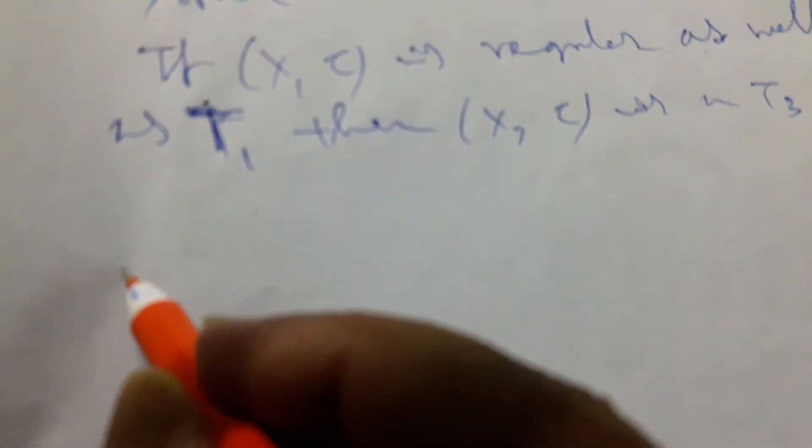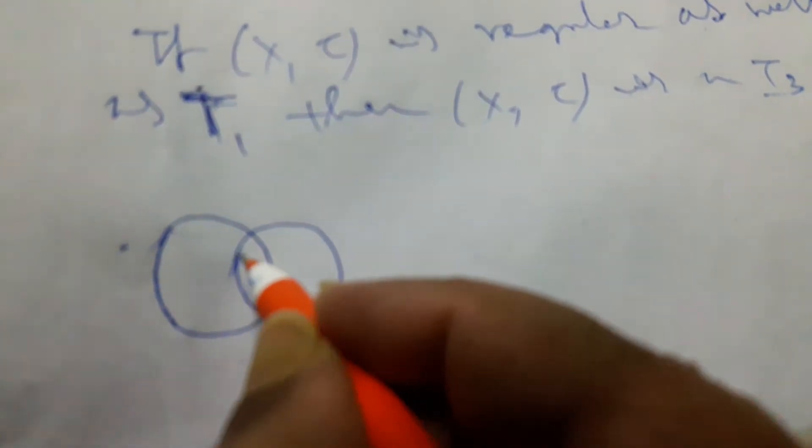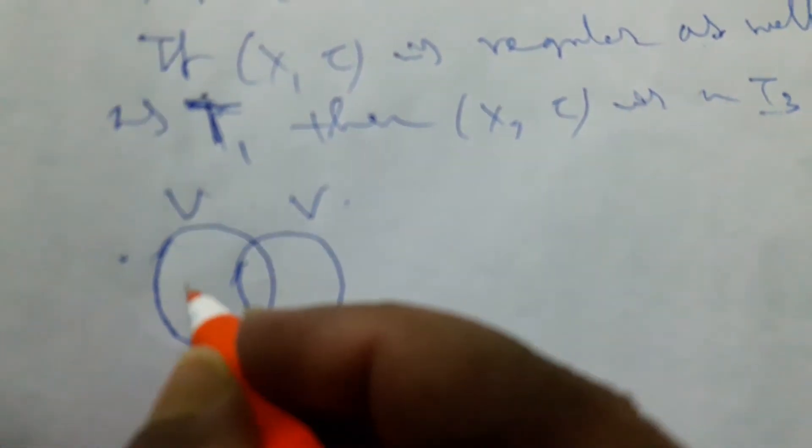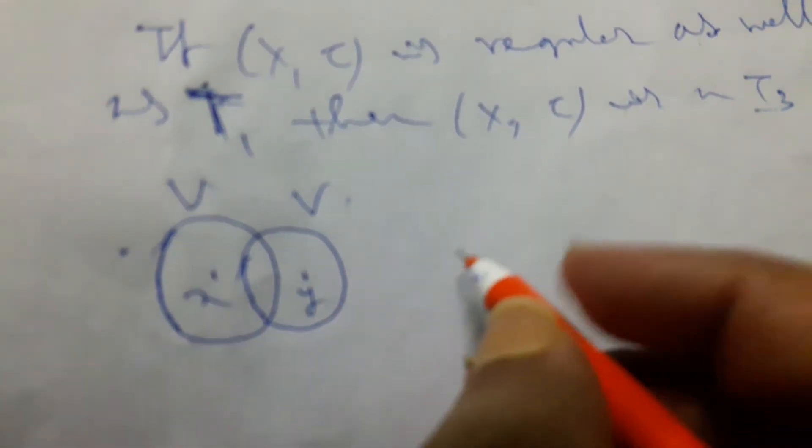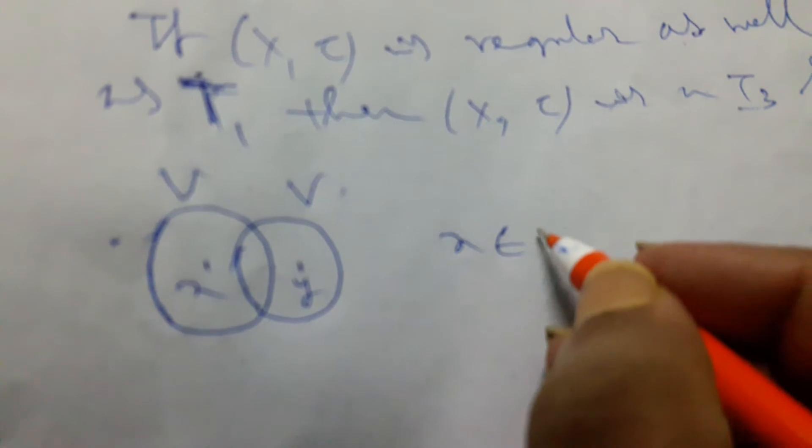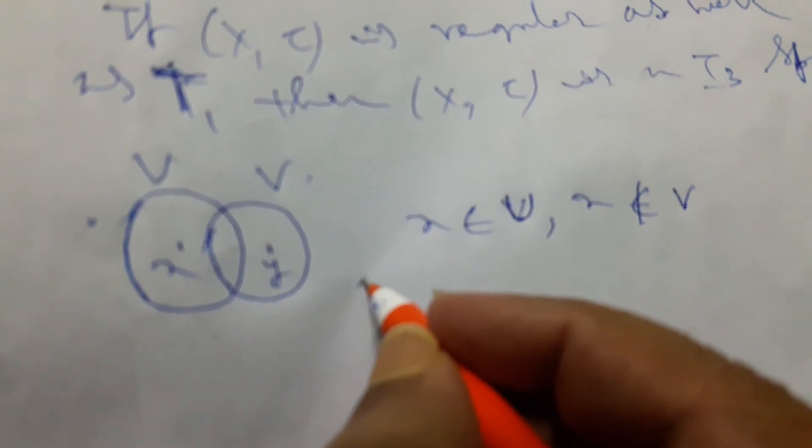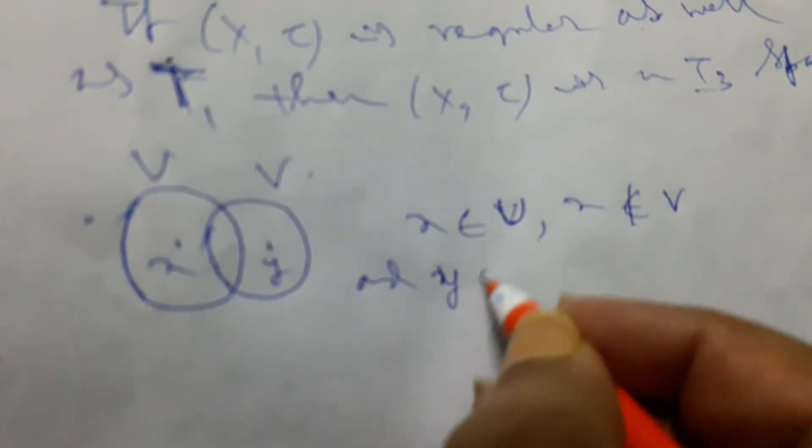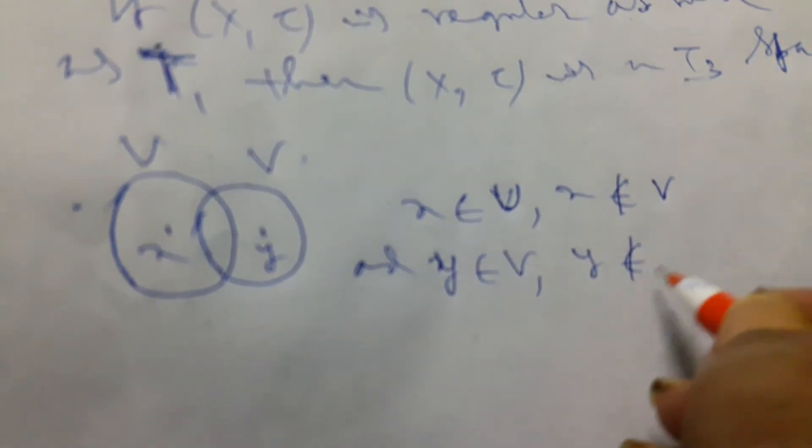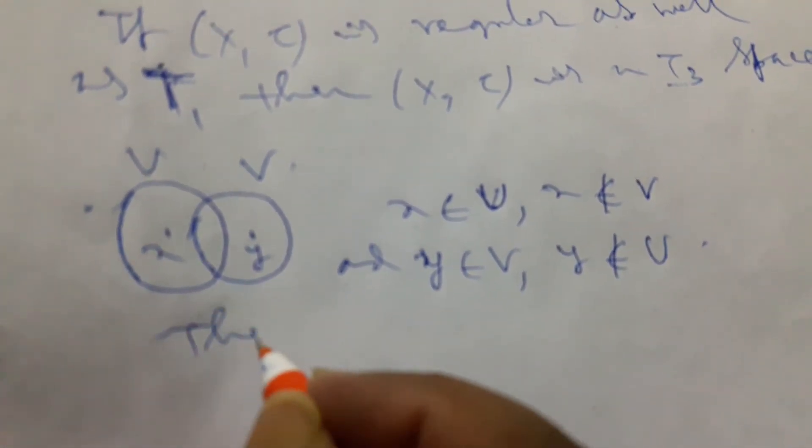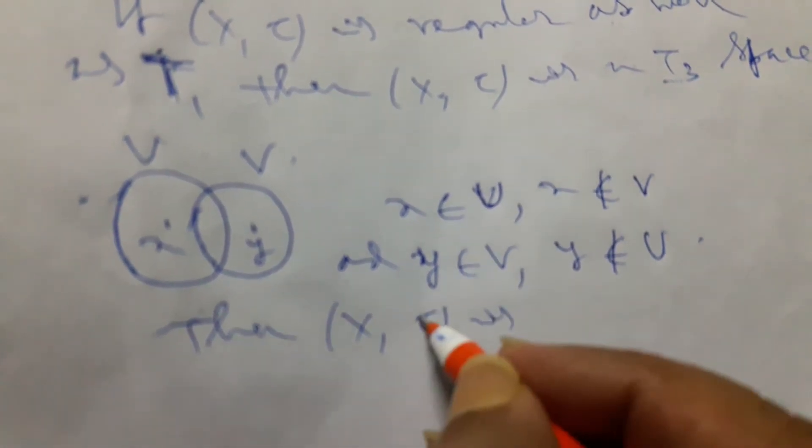What happens there? Side by side, we find different type of effect. If this result is T1, then we can find by the property of T1, if U and V are the open sets containing different points: if x is belonging to U, then x does not belong to V, as well as if y belonging to V, then y doesn't belong to U. Then x tau is T1.